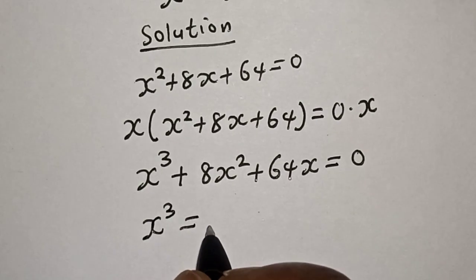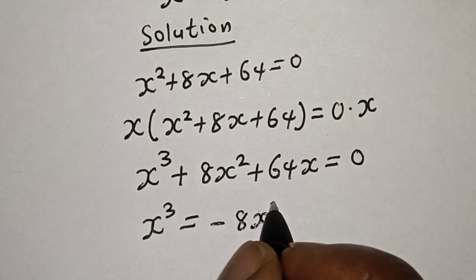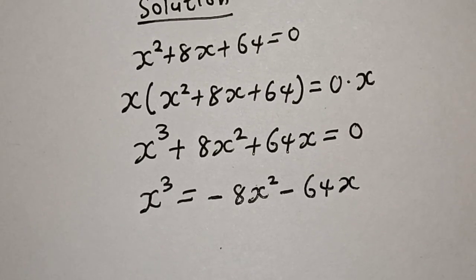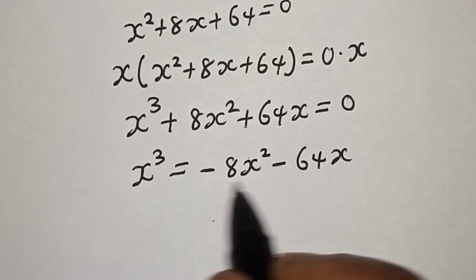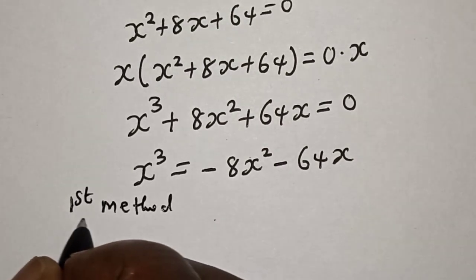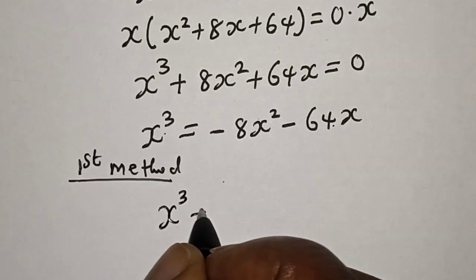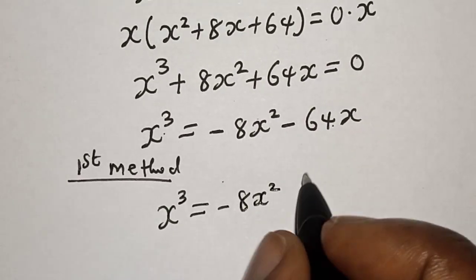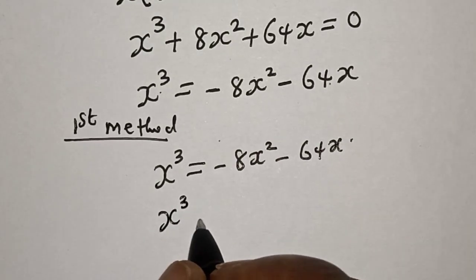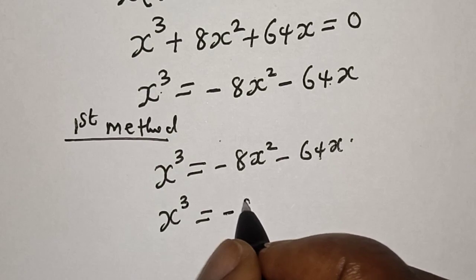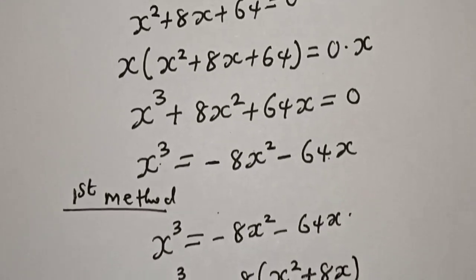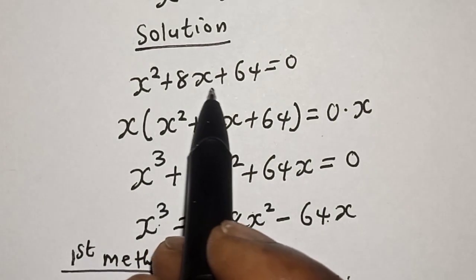So s³ = −8s² − 64x. At this point we're going to solve in two ways. First method: s³ = −8s² − 64x, which we can write as s³ = −8(s² + 8x).